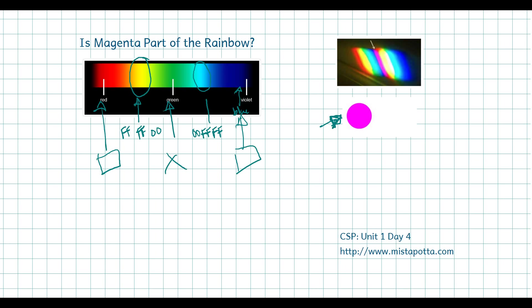If you stare at a magenta circle for about a minute and then immediately stare at white space, the afterimage you'd see would actually be green — what you'd expect when the red and blue rods are exhausted and only green rods are triggered. If you've ever closed your eyes and rubbed them, you see bursts of red, green, and blue — that's your eye rods trying to activate from slivers of light coming through your eyelids.